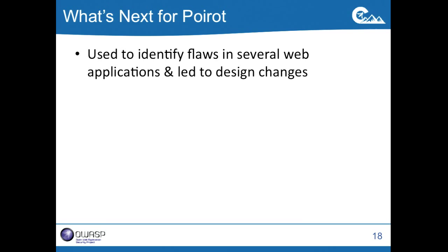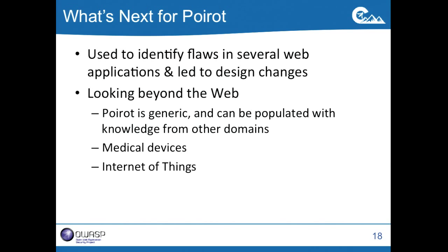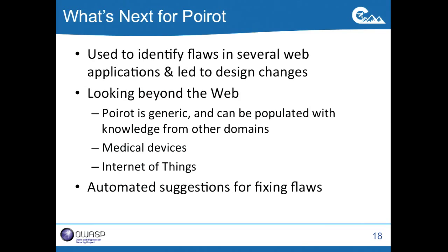What's next and what's the status with Poro? I've used Poro to model and identify flaws in several commercial applications, and in some cases the analysis has led to design changes in those systems. I'm also looking beyond the web — thinking about other domains where this kind of tool could be useful. Poro is generic, meaning it can be populated with knowledge from different domains. In particular, I'm looking into applying Poro for medical devices as well as home automation devices for the Internet of Things. The next feature I'm trying to add is having Poro generate suggestions for fixes, automatically fixing flaws based on the knowledge it has about common fixes.